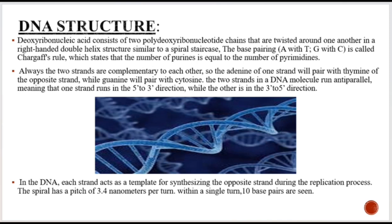The two strands in a DNA molecule run anti-parallel, meaning one strand runs in the 5' to 3' direction while the other runs in the 3' to 5' direction. Each strand acts as a template for synthesizing the opposite strand during replication. The DNA helix has a pitch of 3.4 nm per turn, and within a single turn, 10 base pairs are present — meaning every turn of the helix consists of 10 rungs in the DNA ladder.